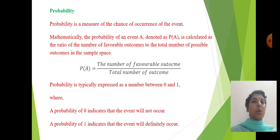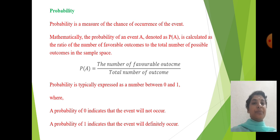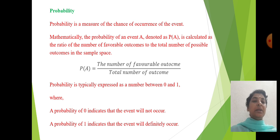Next one is probability. The concept of probability is a measure of the chance of occurrence of an event. Mathematically, the probability of an event A, denoted as P(A), is calculated as the number of favorable outcomes divided by the total number of outcomes. Probability is expressed as a number between 0 and 1, where 0 indicates the event will not occur and 1 indicates the event will definitely occur.